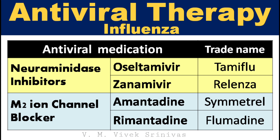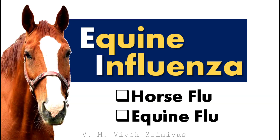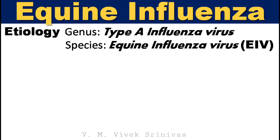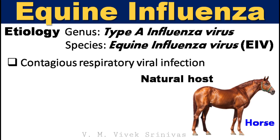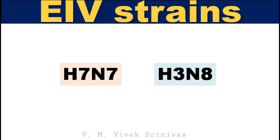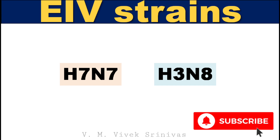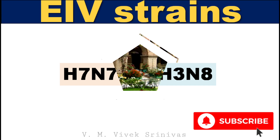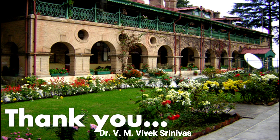With this we are coming to the end of swine influenza. Next infection under this genus: Equine influenza, also known as horse flu. This infection is caused by the equine influenza virus of the genus type A influenza virus. This virus causes contagious respiratory infection in horses, characterized by pyrexia, harsh dry cough, and mucopurulent nasal discharge. Some of the strains causing equine influenza infection are H7N7 and H3N8. In the next video presentation we will discuss on parvoviral enteritis in detail. Hope the lecture is informative and useful. Thank you.